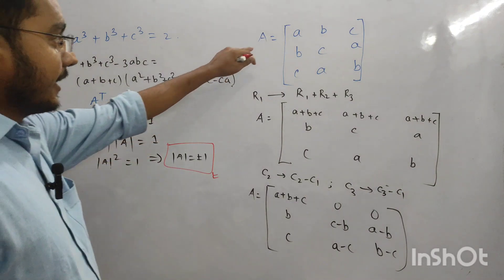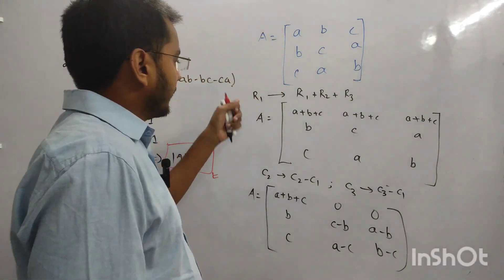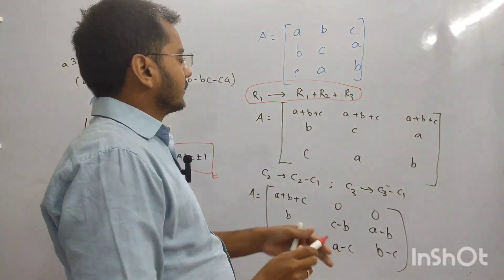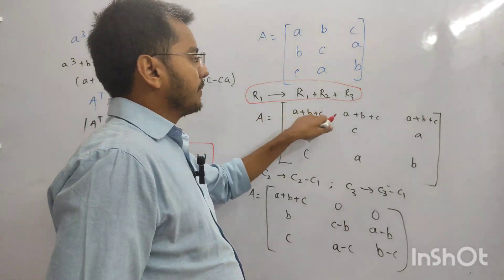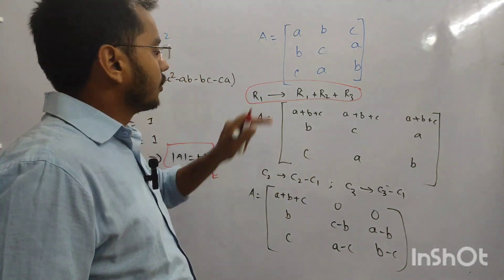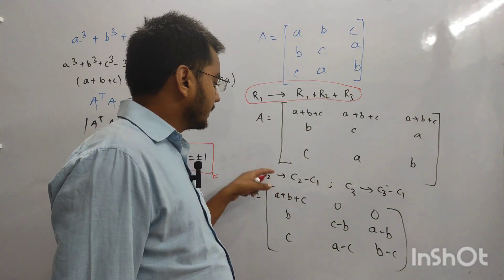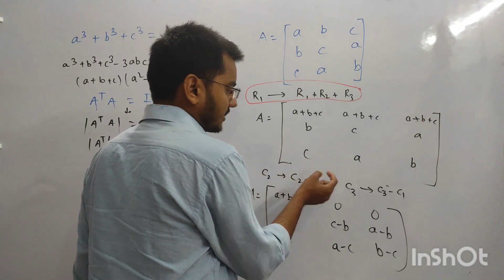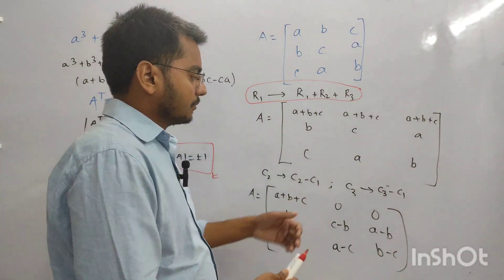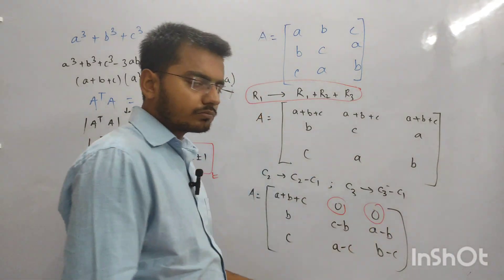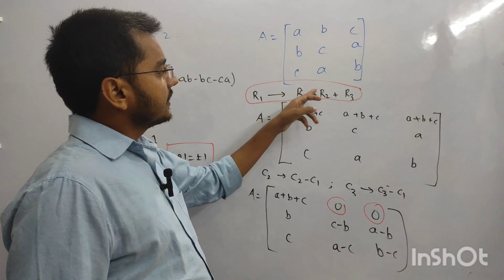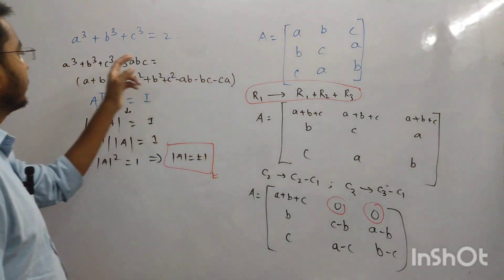अब देखो, यह given matrix है। हमने row operation किया — first row के साथ R1 + R2 + R3 किया। तो first element बना A+B+C, second भी A+B+C. फिर column operation किया: C2 minus C1 और C3 minus C1 — ताकि यहाँ 0 बन जाए और determinant आसानी से निकाल सकें।